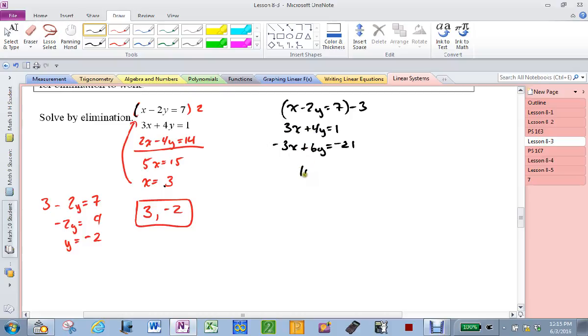The x's drop out. 10y equals negative 20. y equals negative 2. We're still good. Now, I put that in up top here. 3x plus 4 times negative 2 equals 1. 3x minus 8 equals 1. 3x equals 9. x equals 3. 3, negative 2. Does everybody see? It doesn't matter which one you use. It doesn't matter which one you multiply. It doesn't matter at all. As long as you get opposite coefficients. Cool?